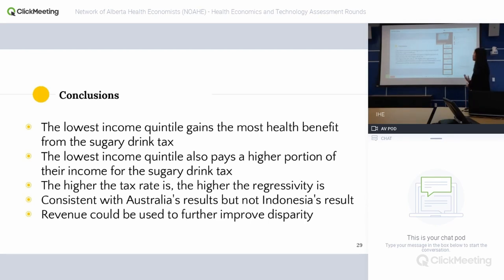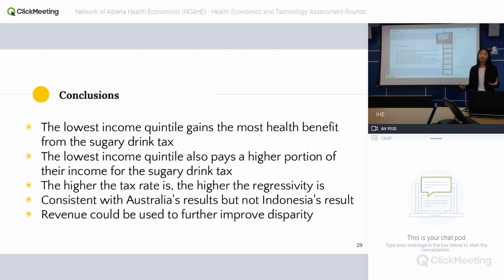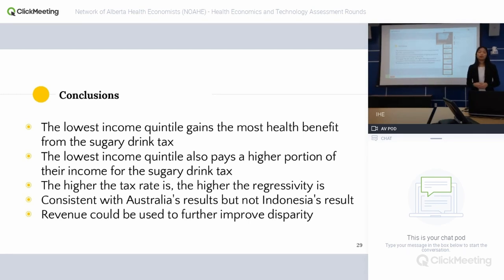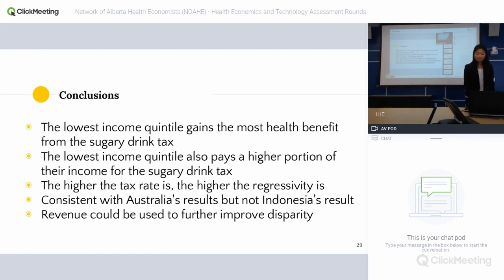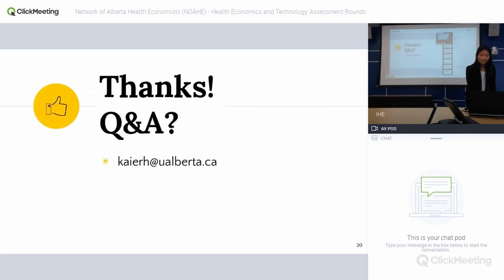In conclusion: the lowest income quintile gains the most health benefit from the tax, but also pays the highest proportion of their income for it. The higher the tax rate, the more regressive it is. Results are consistent with Australia's findings. Overall, the tax will improve health inequality but will also increase financial inequality. The revenue from this tax could be used to fund programs that can further improve equity, both in health and financial terms.